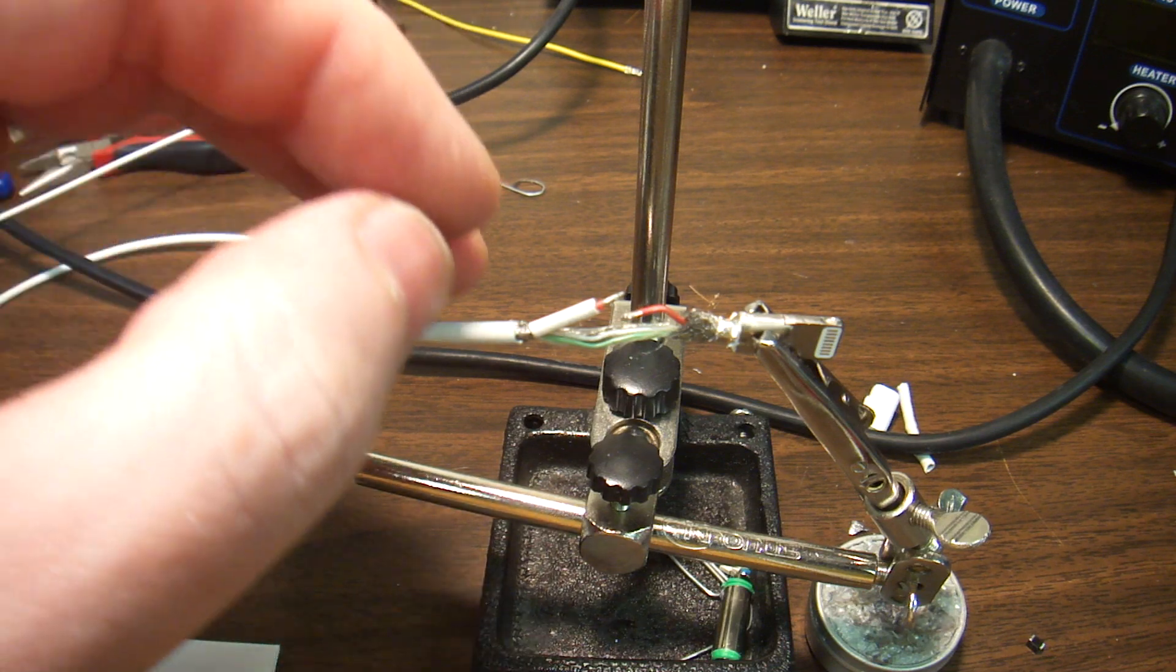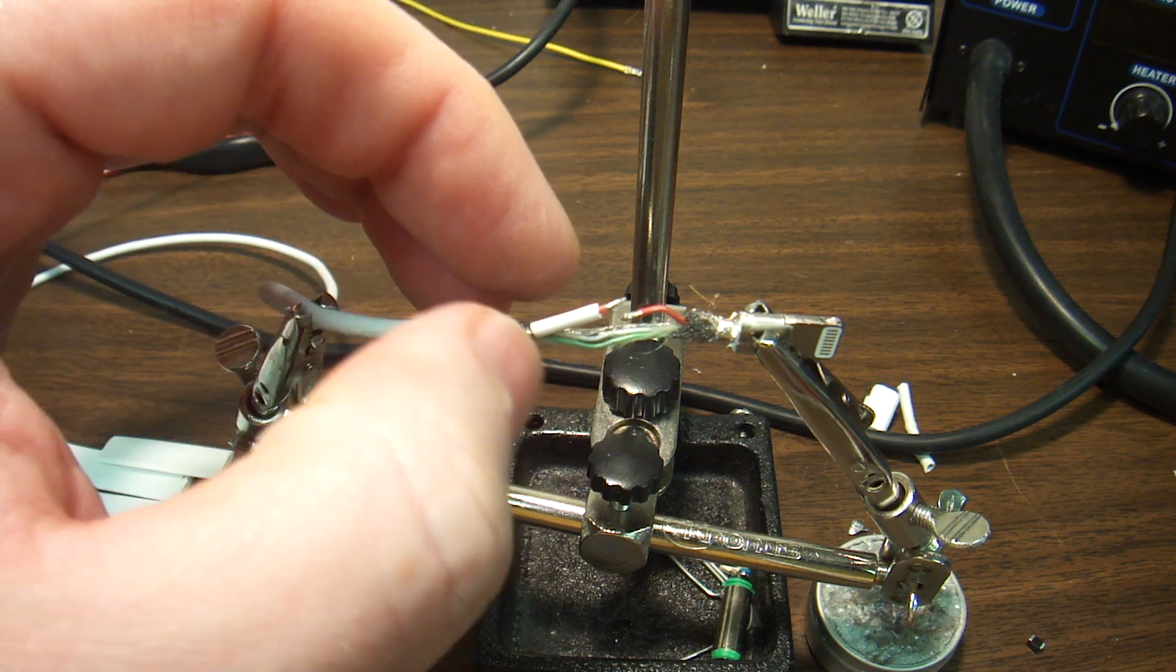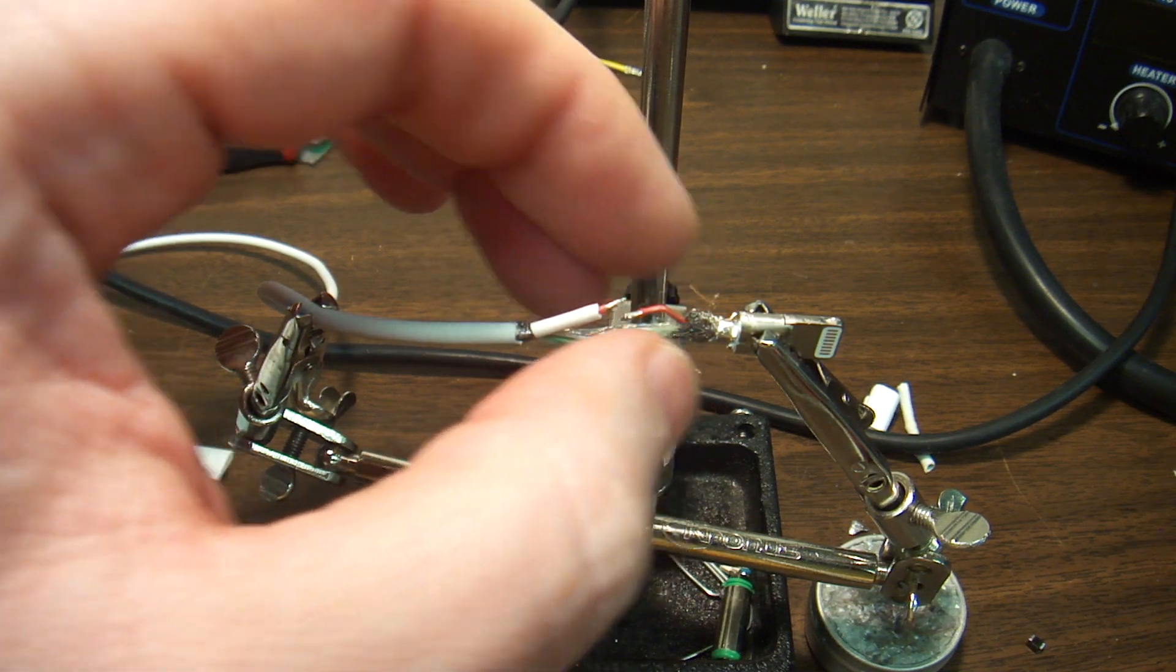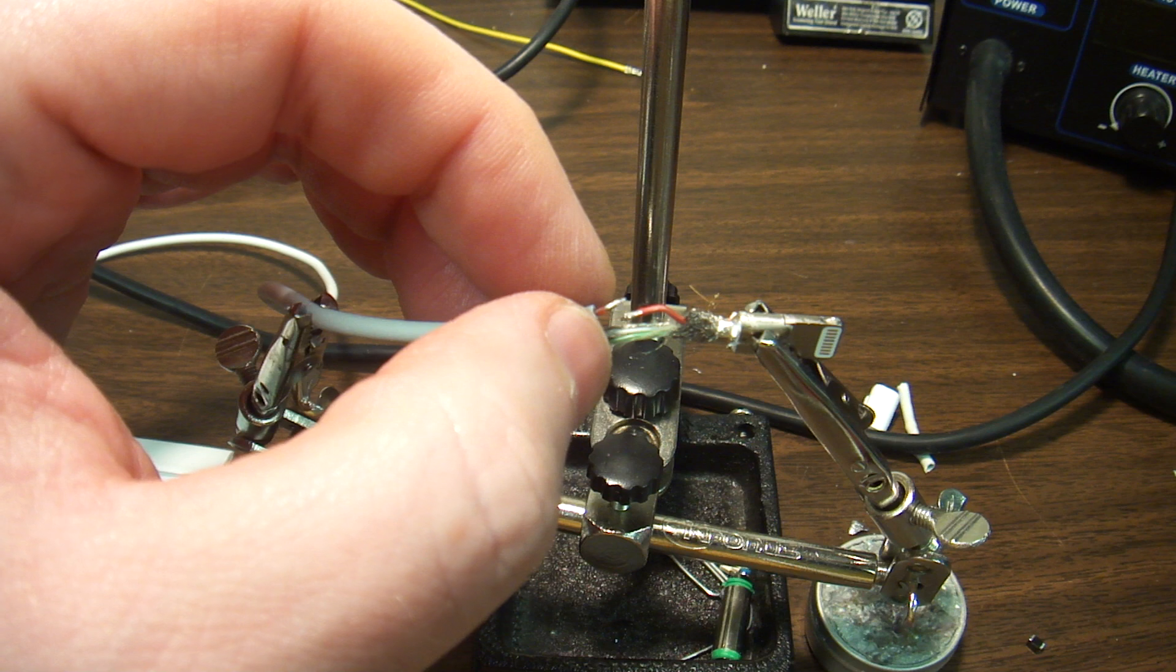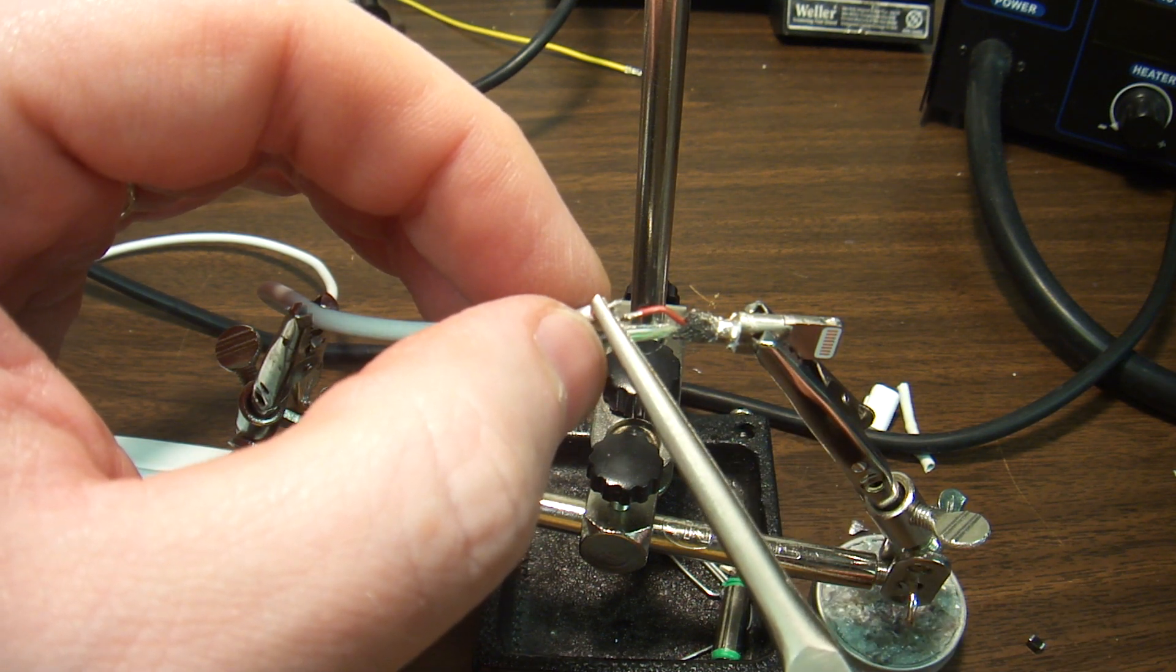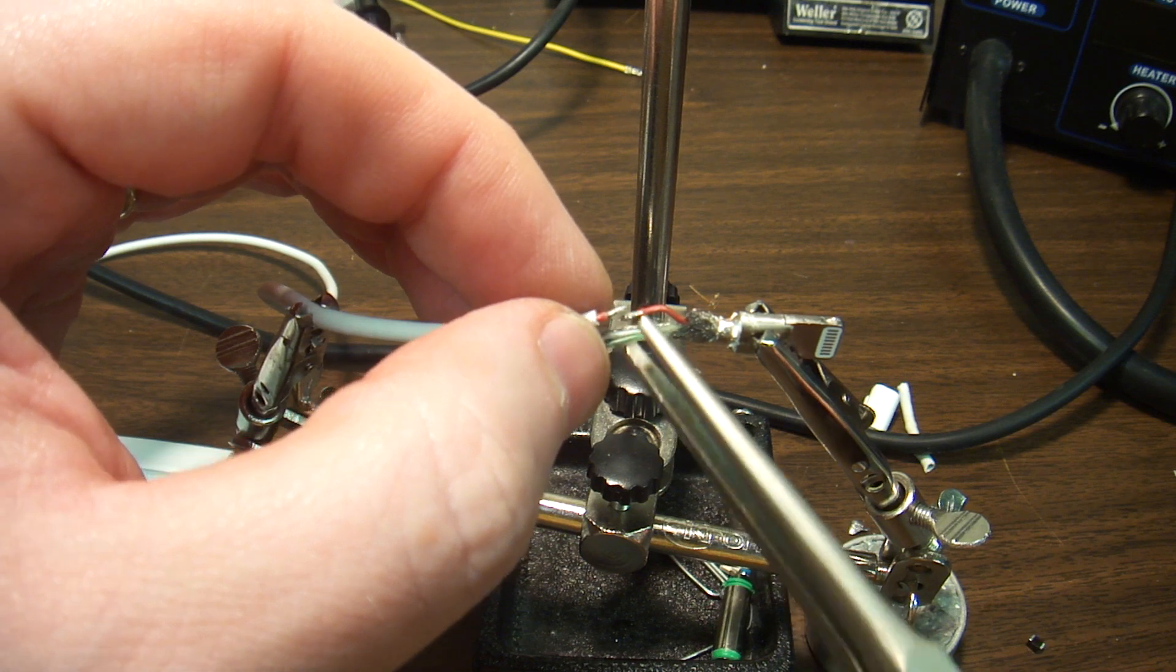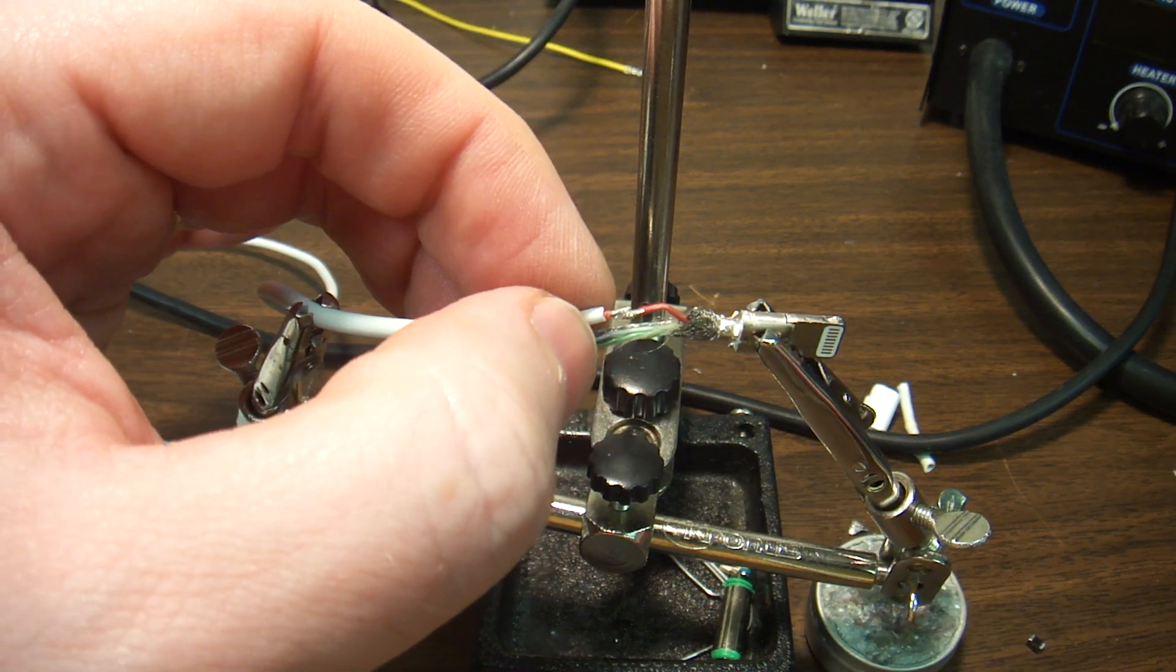This is the part where we actually reconnect the wire. I have the area cleaned up. I have the wires preconditioned. I got some solder on them, and I have a piece of shrink tubing on one of my wires.